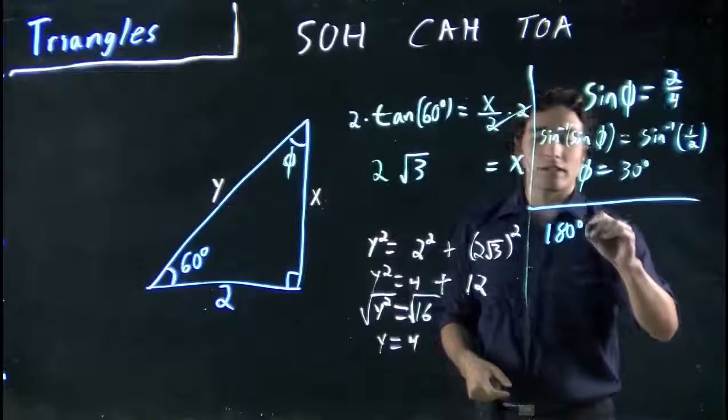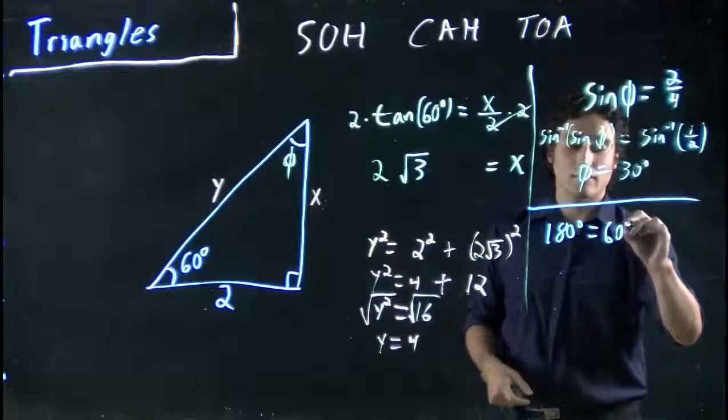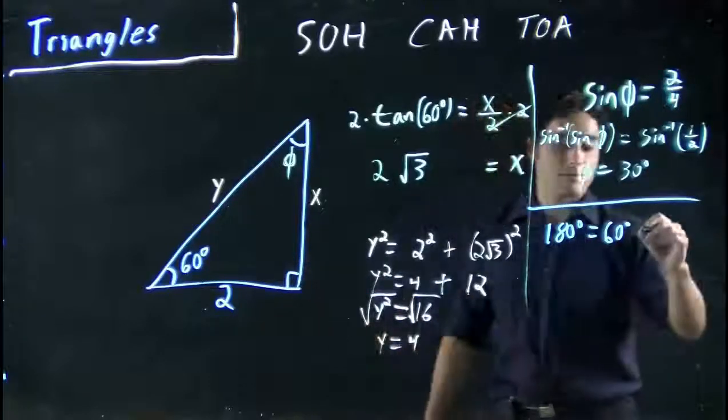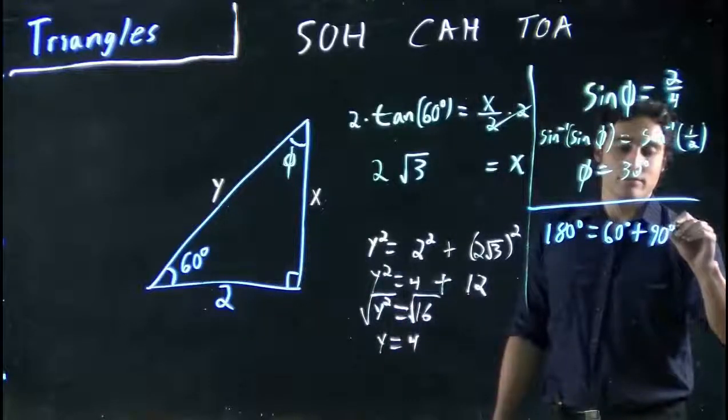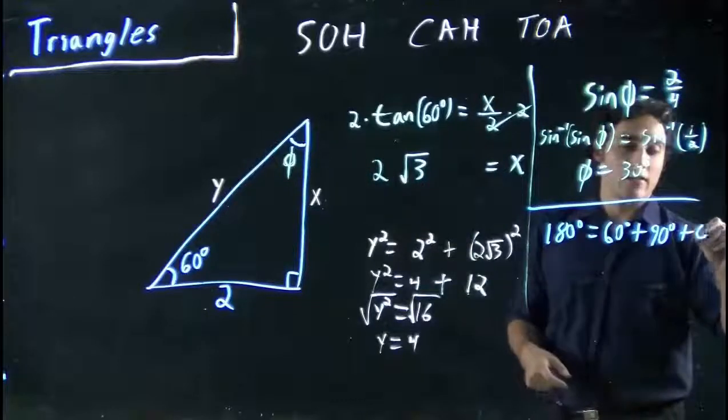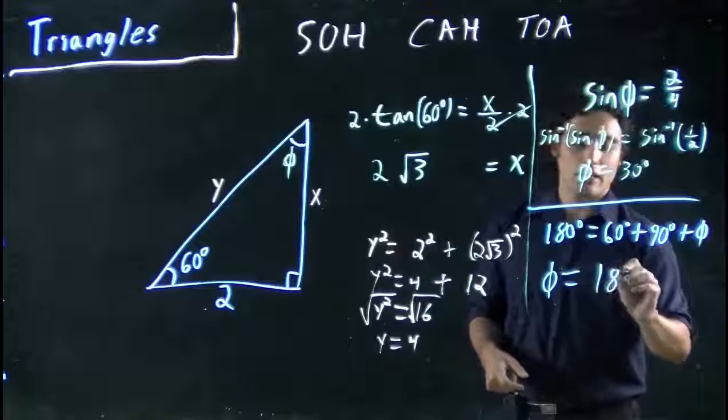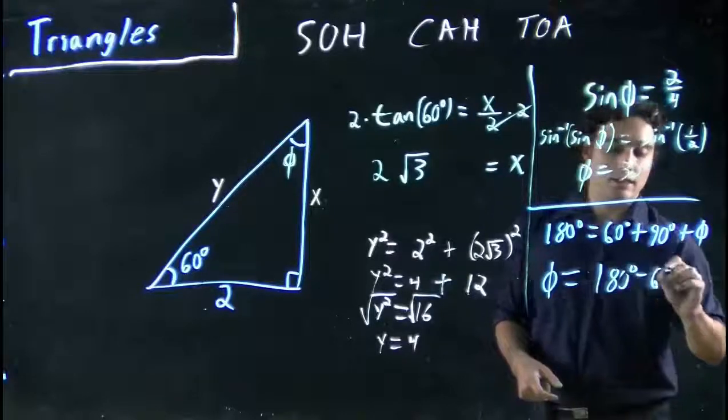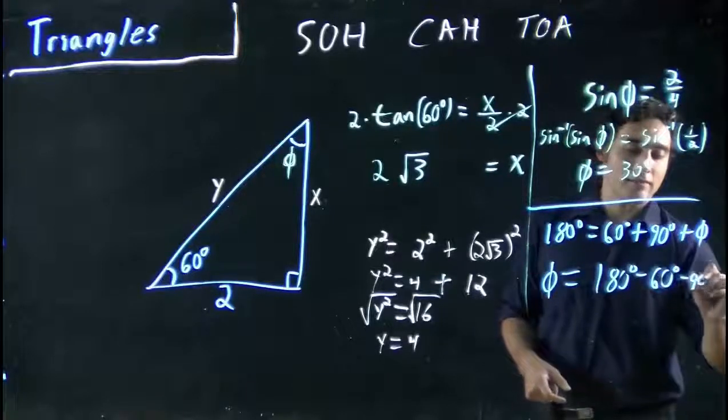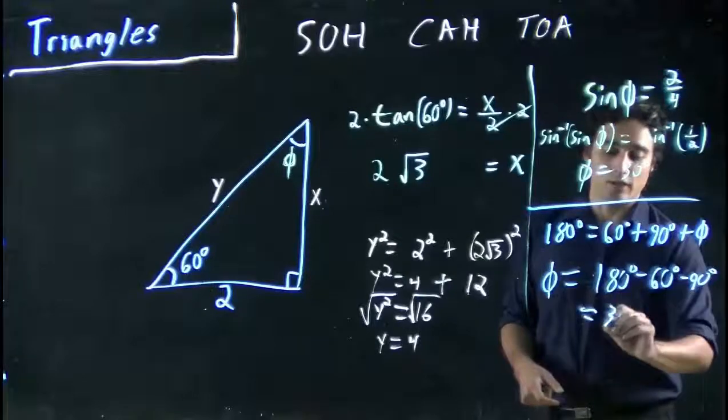So, 180 degrees equals 60 degrees. Remember, this is a 90 plus the phi. So, basically we'd say phi equals 180 minus 60 minus 90 or 30 degrees.